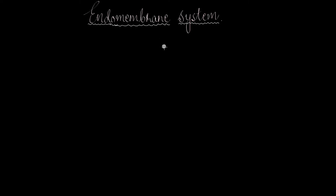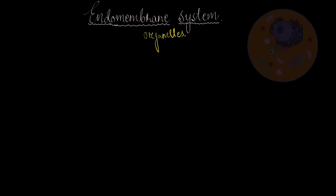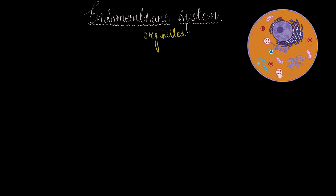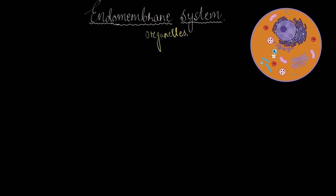What is the endomembrane system? We have heard of the digestive system and respiratory system, but this one seems to be made up of some kind of membrane. Unlike other systems of the body like the digestive or respiratory system, which are made of different organs, this system is made of various organelles. Not all organelles inside a cell are part of the endomembrane system — only a selected few.